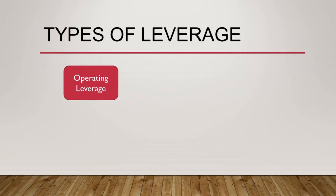The first one was operating leverage, which arises because of the presence of fixed operating costs that need to be paid to run the business over a longer period of time. Whatever cost is required that is fixed in nature — either to acquire assets or to make monthly payments such as salary or rent — whatever you are using as a fixed asset that is recurrent in nature, all those costs give rise to operating leverage.